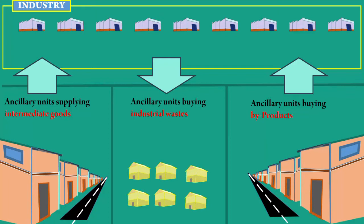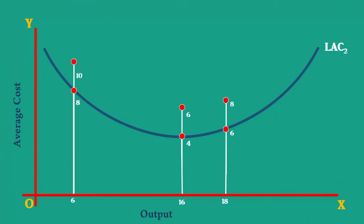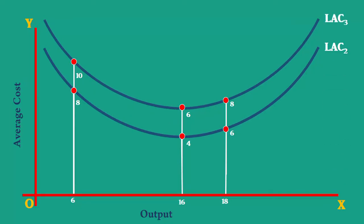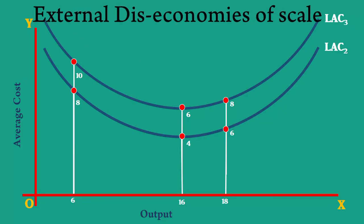There is a possibility for the Long Run Average Cost Curve to be shifted up. The firm produces the same output — 6, 16 and 18 units — at 10, 6 and 8 rupees respectively. Then, LAC2 will get shifted up to LAC3. This happens when the external diseconomies of scale dominate the scene.